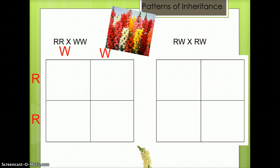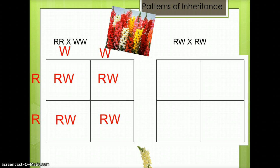The Punnett square on the left shows a red snapdragon, capital R capital R, crossed with a white snapdragon, capital W capital W. Notice that they are both written with only capital letters. This cross would result in 100% of the offspring being pink snapdragons, capital R capital W.